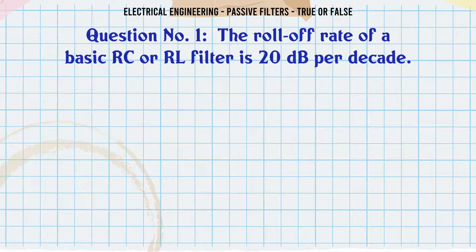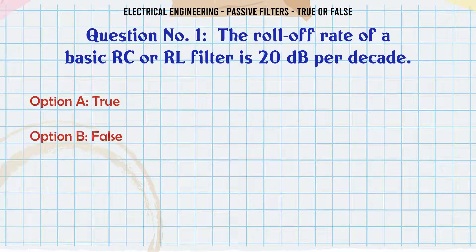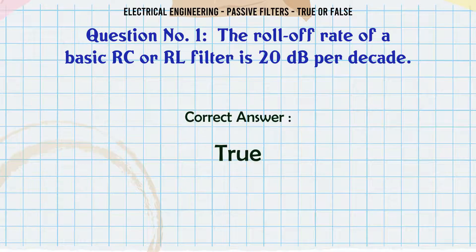The roll-off rate of a basic RC or RL filter is 20 dB per decade. A. True. B. False. The correct answer is: True.